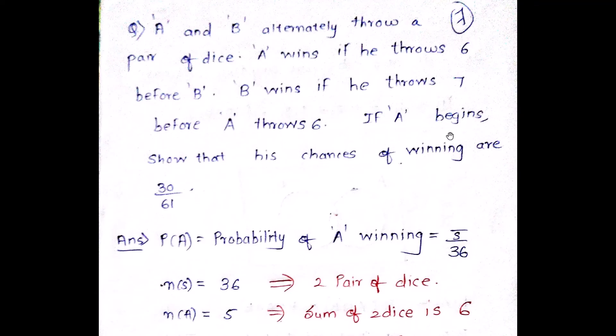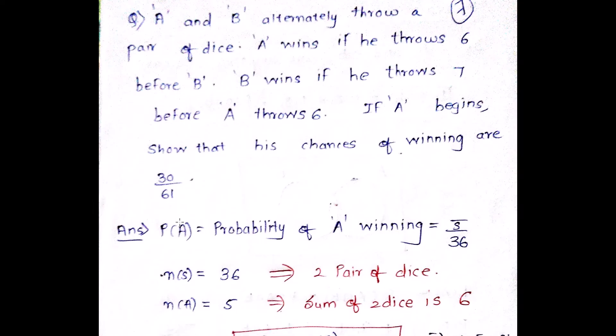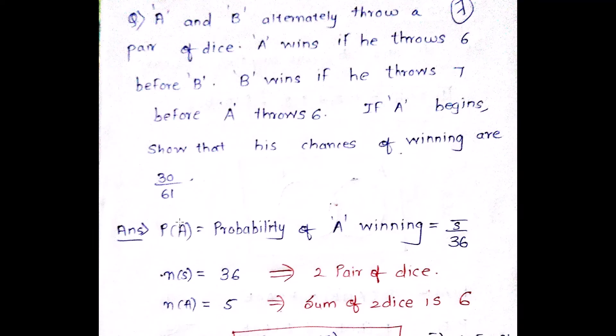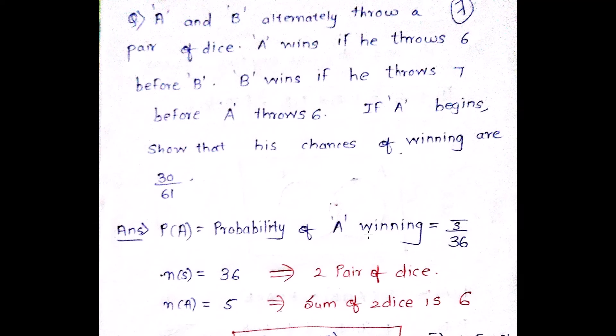So if A begins, if A starts throwing the die first, then B comes. What is the probability of A to win is 30 by 61. You need to prove that. So let's try to first understand what is the probability of individual player winning. So when does A win? A will win if he throws 6. So the probability of A winning is given as 5 by 36.